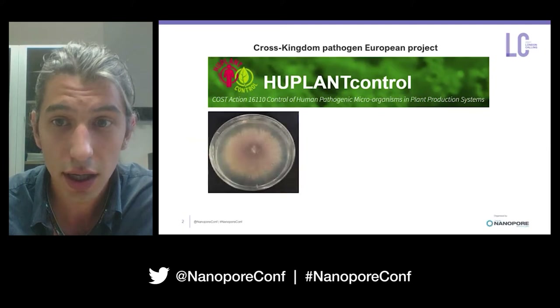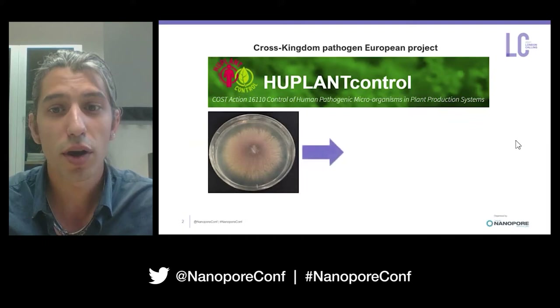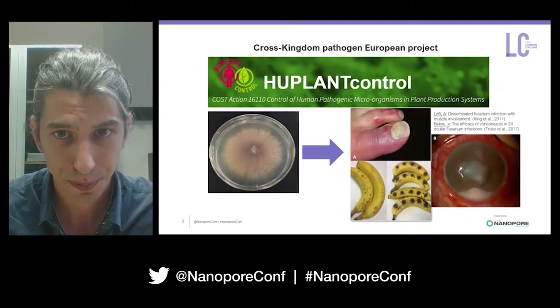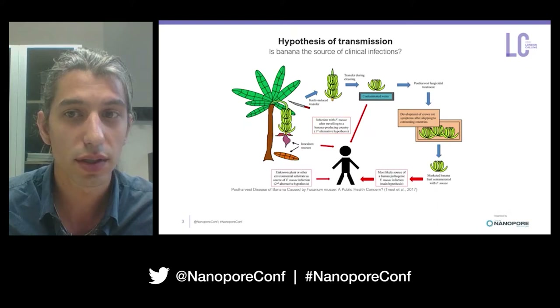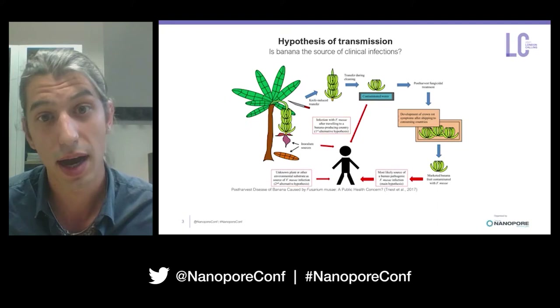This pathogen was reported to be able to infect bananas and humans, as we can see from these three pictures. The hypothesis of transmission was proposed for the first time in 2017, and these hypotheses are based on the fact that the first infection occurred on banana and not on human, and then it spread around the world traveling with exported bananas.